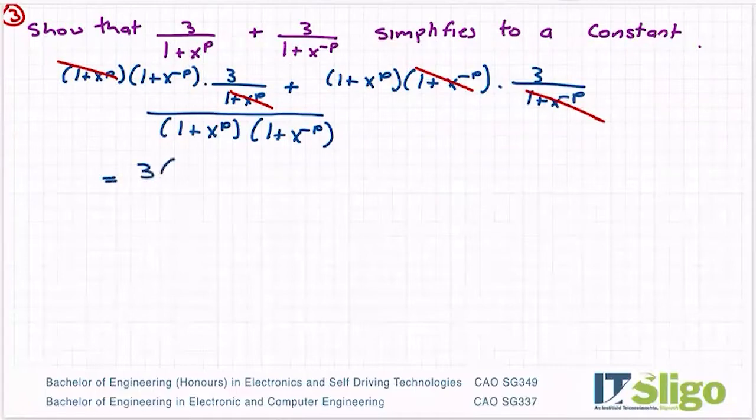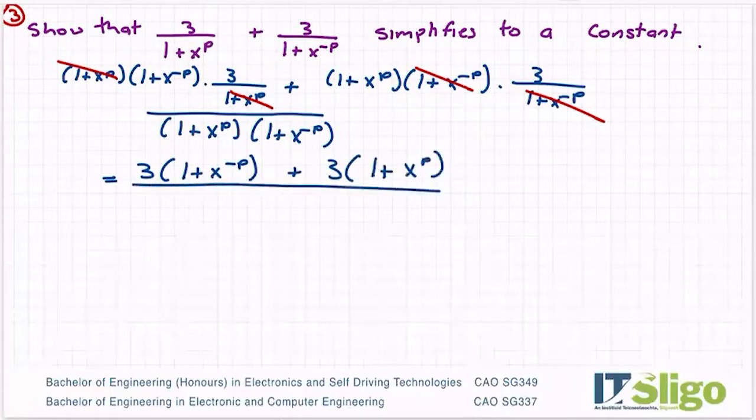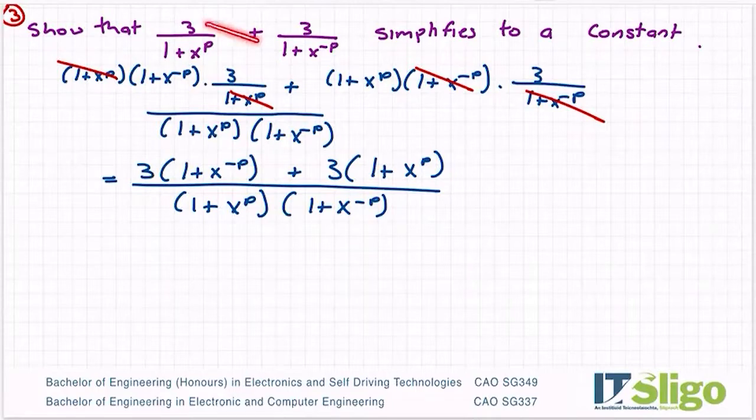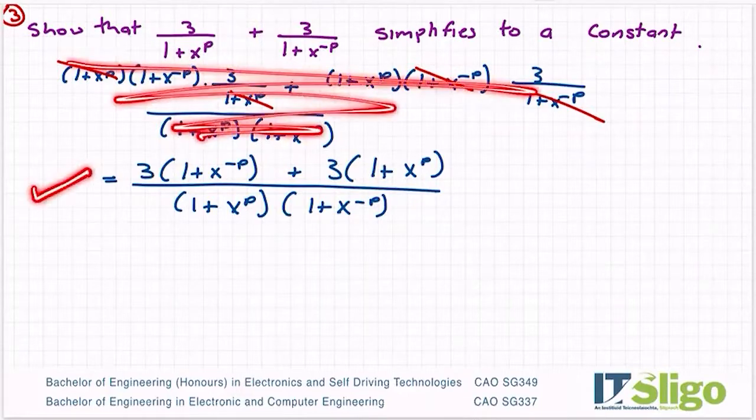So him and him and him and him. So let me write out what's left: three times one plus x to the power of minus p plus three times one plus x to the power of p over one plus x to the power of p one plus x to the power of minus p. So the net effect is how some of you might have been taught. It's a bit like a cross multiply. So you end up with three times one plus x to the minus p. Plus three times the other side, three by one plus x to the p. So some might have been taught to cross multiply. So some might not have this piece at all. They might go straight to this piece.